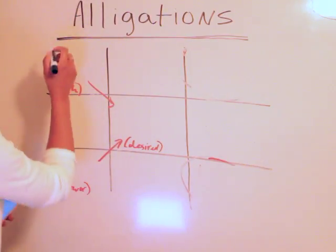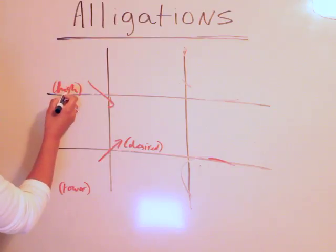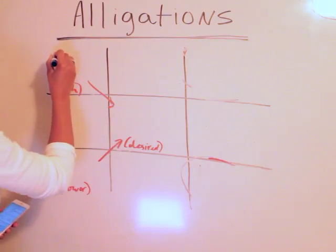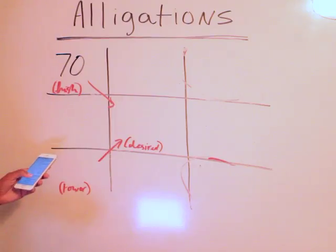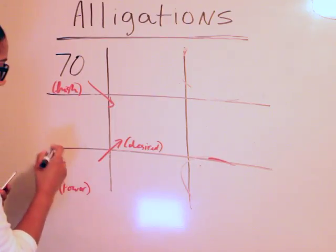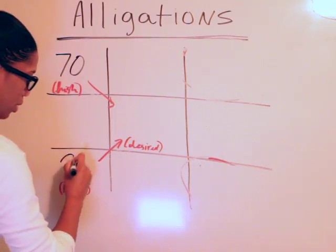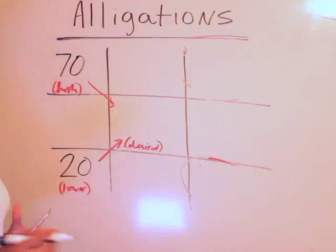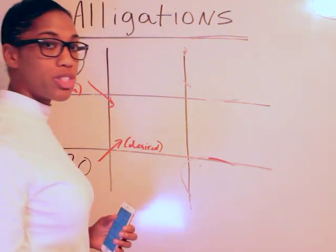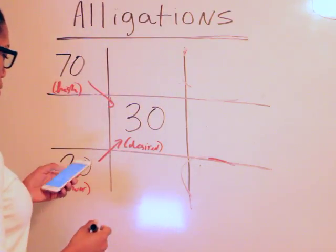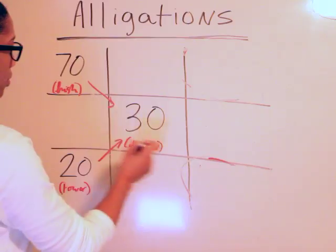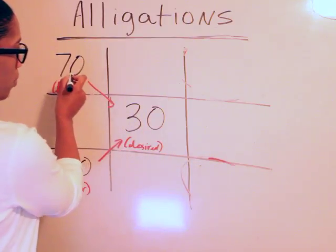If we go according to our formula that we discussed previously, we know that the higher percentage would go here. So we know that 70% would go here. We know that here the lower would go, so the 20%. And our desired percentage that we want to get is 30%.